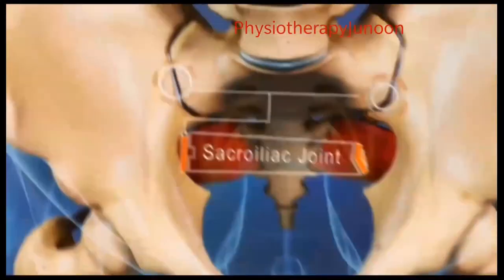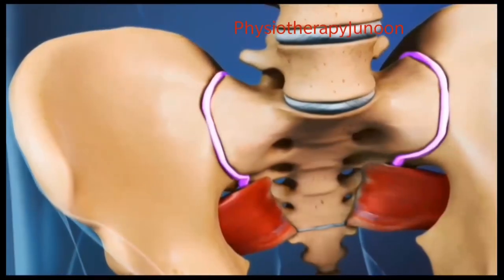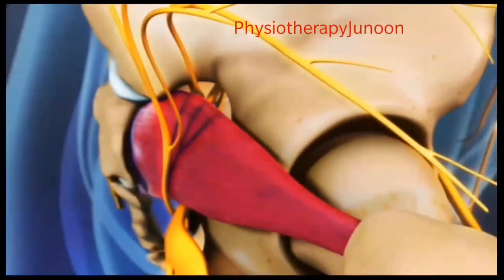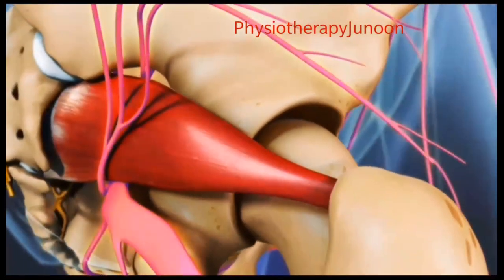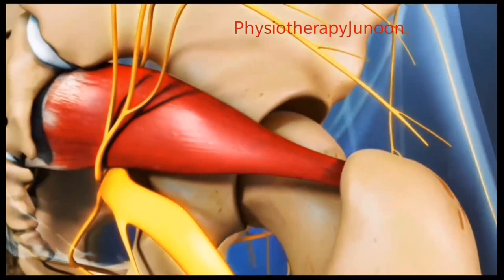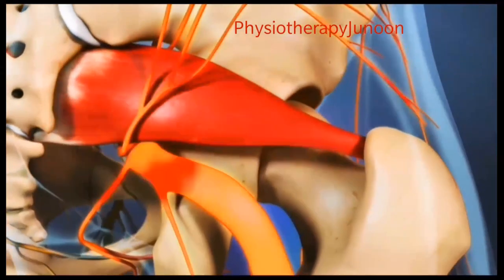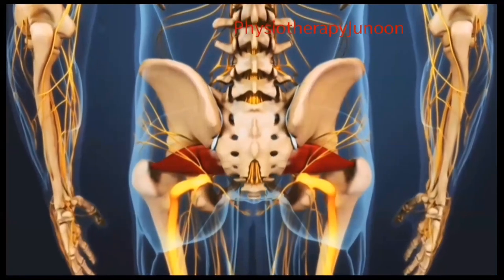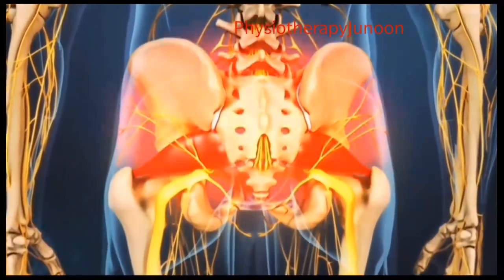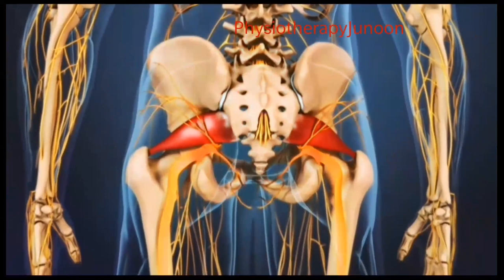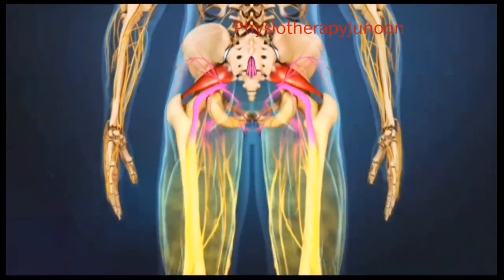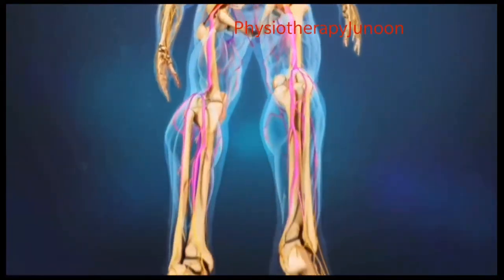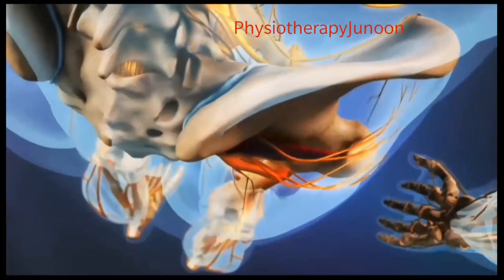When the muscle is tight or in spasm, you tend to get leg symptoms like numbness and tingling. If the muscle is tight and the sciatic nerve is compressed, this will affect the gluteal region, the legs, the thigh, the calf region, and the foot region.